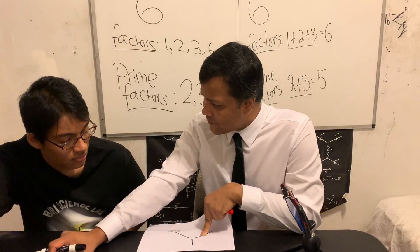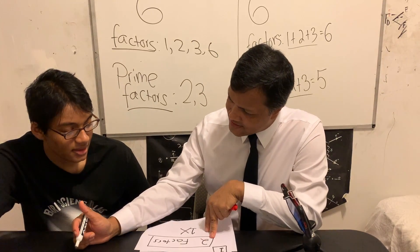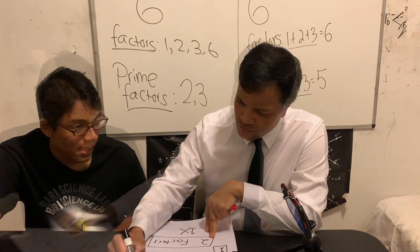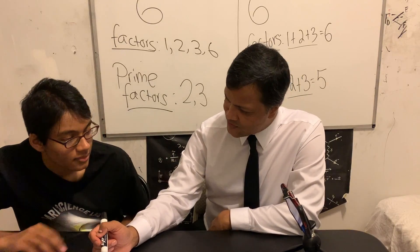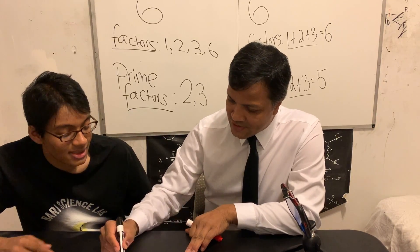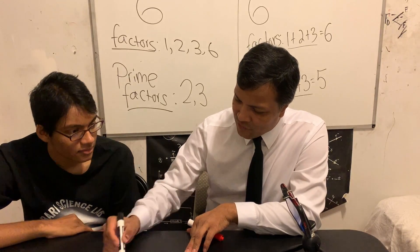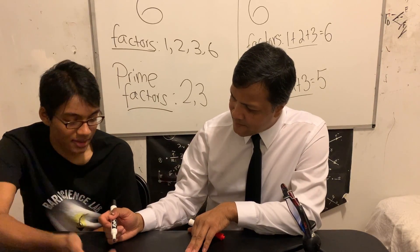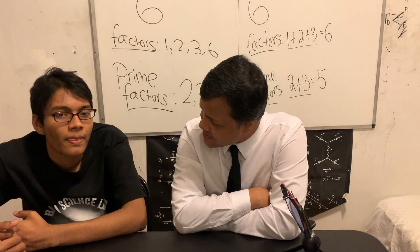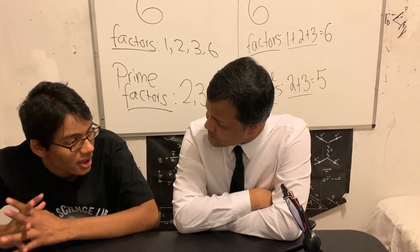What's next? Two! Two has how many factors? One and two itself — so two factors. Does it satisfy being a prime number? Yes, it has exactly two factors. So now can you give me the definition? A prime number is a number with exactly two factors: one and itself.